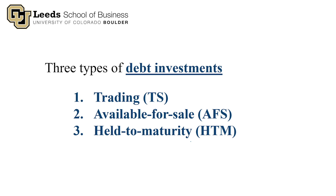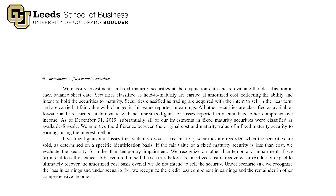These are three different accounting methodologies for investments in debt securities. The company we'll look at is Berkshire Hathaway. In addition to making investments in companies' equity securities, they also make investments in companies' debt securities. If you go to their accounting policy footnote — typically footnote one — part D is their investments in fixed maturity securities. Fixed maturity is just another term for debt securities, as debt securities have a maturity date.